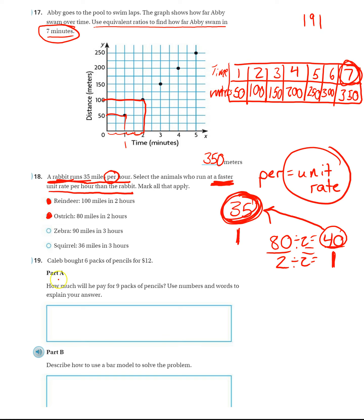All right. Number 19. Caleb bought six packs of pencils for $12. How much will he pay for nine packs of pencils? Use numbers and words to explain your answer. I want to know how much he spent to get nine packs.